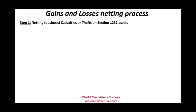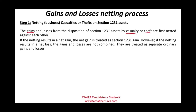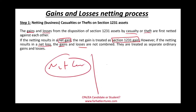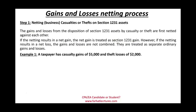If the netting of casualty and theft gains and losses results in a net gain, that net gain is treated as a Section 1231 gain. However, if the result is a net loss, the gains and losses are not combined — they are treated separately. This is an important concept to remember.